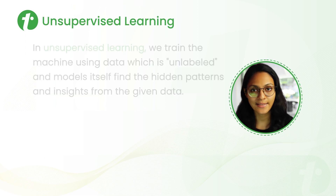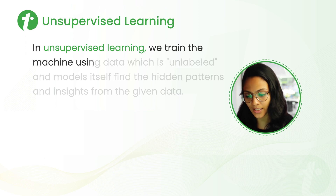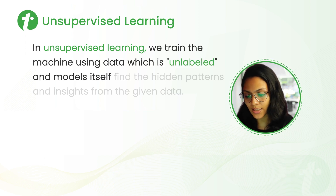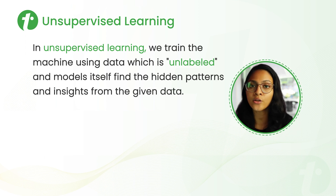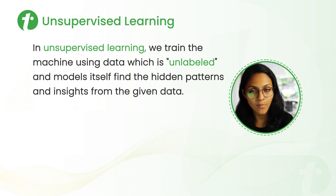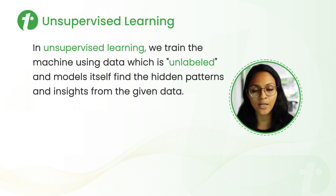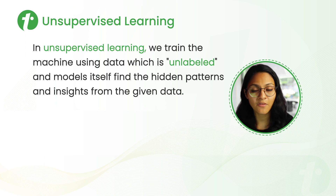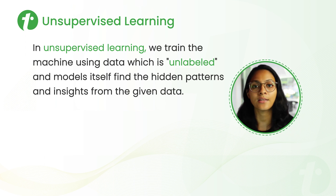So first, let's talk about unsupervised learning. From definition, in unsupervised learning, we train the machine using data which is unlabeled, and the model itself finds the hidden patterns and insights from the given data. In supervised learning, we provide labeled data to the model and train it on that. After training, when we provide a new data point, it predicts the outcome. But in unsupervised learning, we provide unlabeled data to the model, and the model itself finds hidden patterns or insights from that data and gives us that as the outcome.